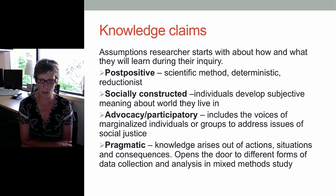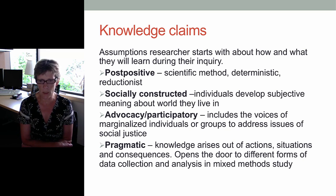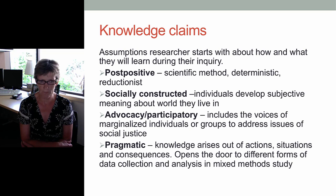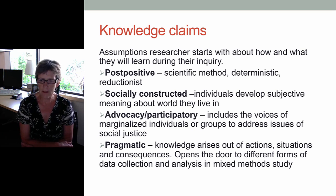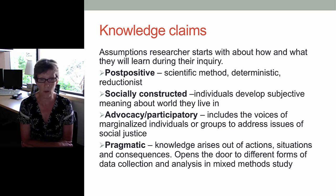Socially constructed knowledge claims, or social constructivism, looks at how people understand the world they live in and develop subjective meaning. It's very complex and the meaning is negotiated socially and historically — people form these meanings through their interactions with others and with experiences. Next is the advocacy and participatory knowledge claims. With post-positivism it imposes structural laws that don't fit with marginalized individuals or groups or address issues of social justice. By including the voices of the individuals, it can address issues of disempowerment, inequality, and oppression, and the voices of the participants become a united voice for reform and change. Examples of this are feminist and racialized discourses, queer theory, and so on.